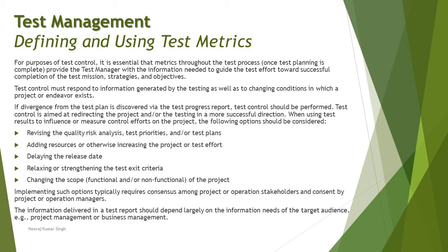If divergence from the test plan is discovered via the test progress report, test control should be performed — deploying test control actions which might be predefined by the test manager. The test manager should plan for standard issues and deviations from schedule and write specific control actions to deploy. Test control is aimed at redirecting the project or testing in a more successful direction. Factors the test manager should consider include revising the quality risk analysis, test priorities, or the test plan, and adding resources to increase the test effort.